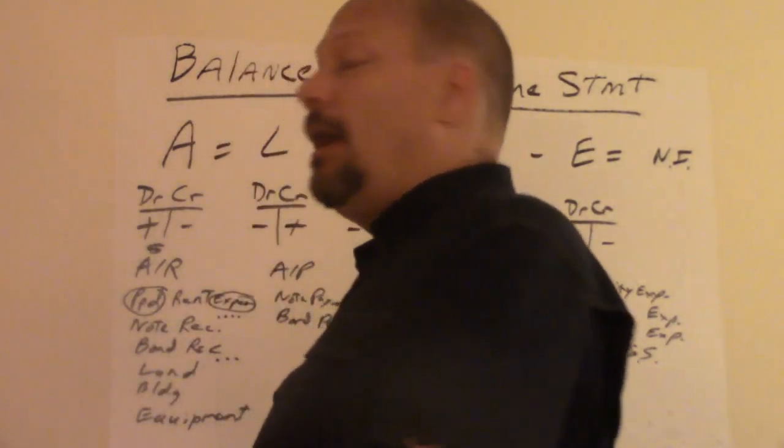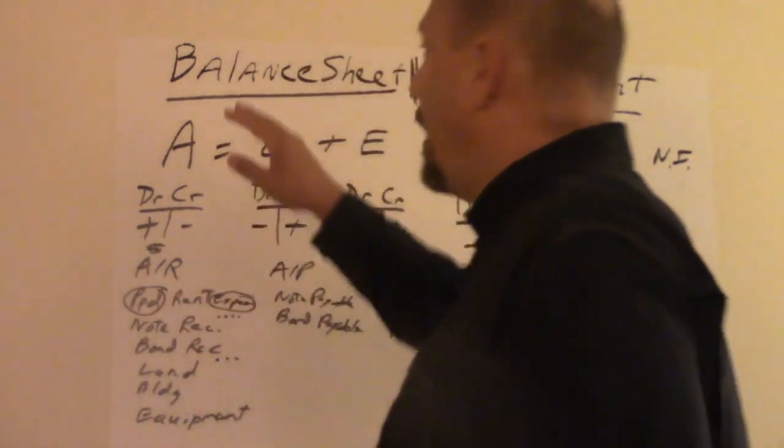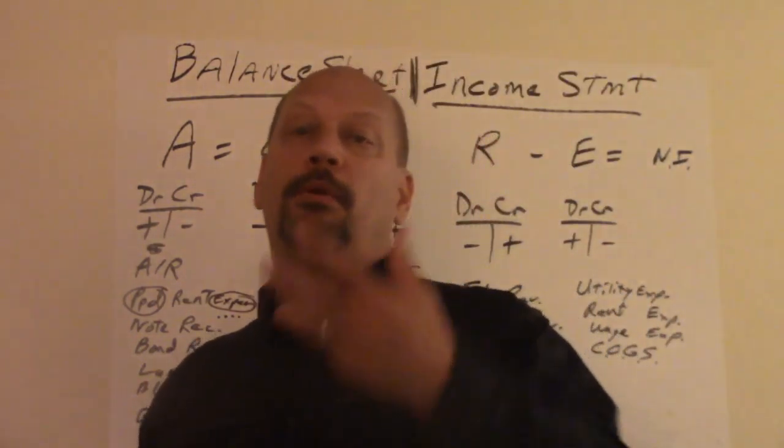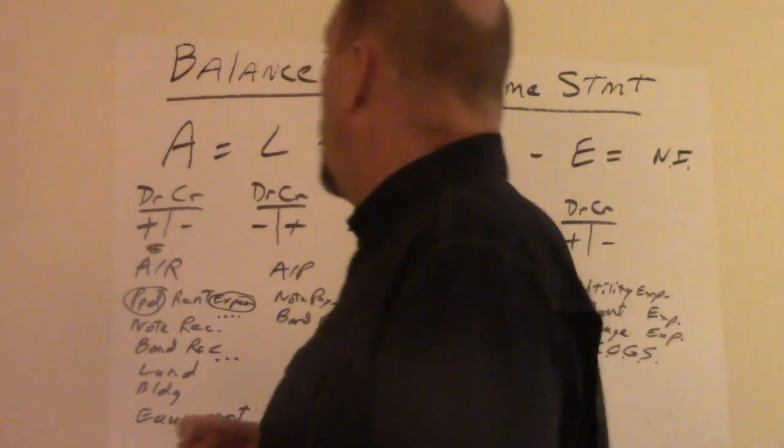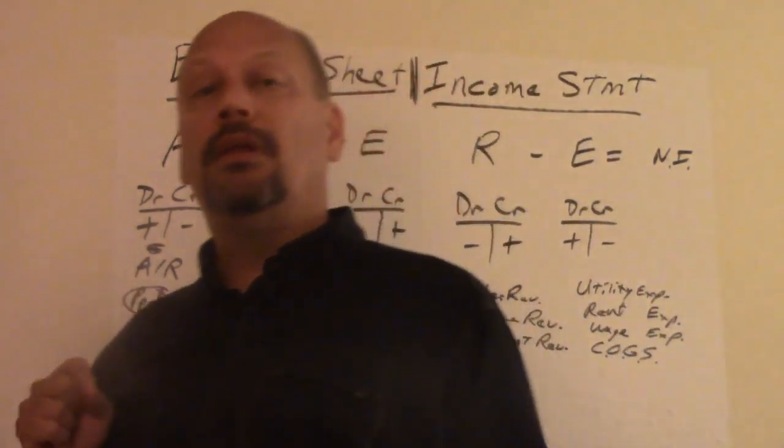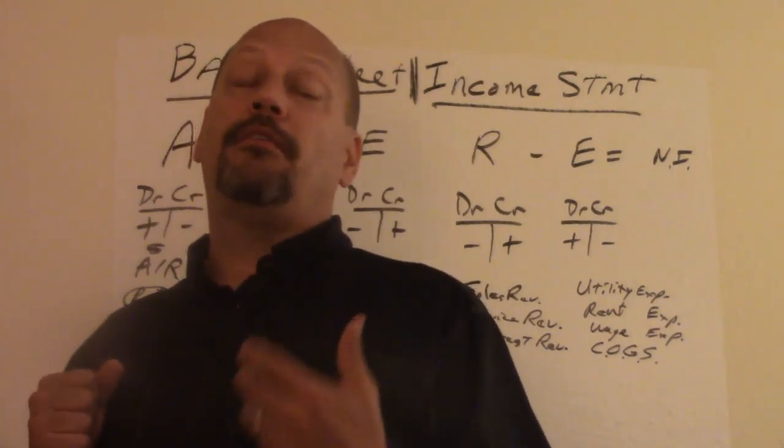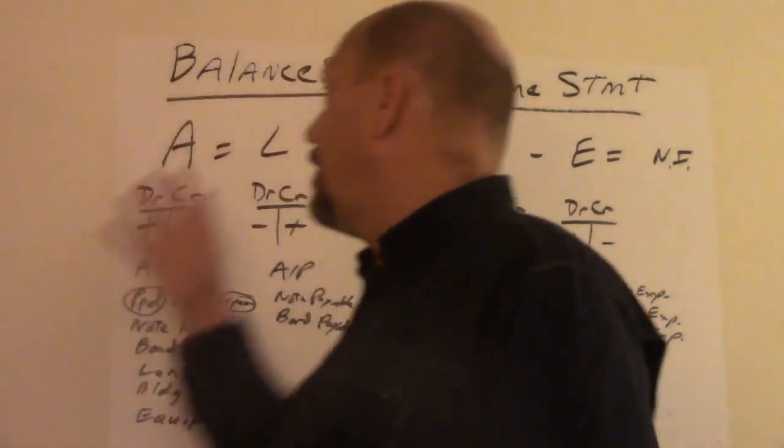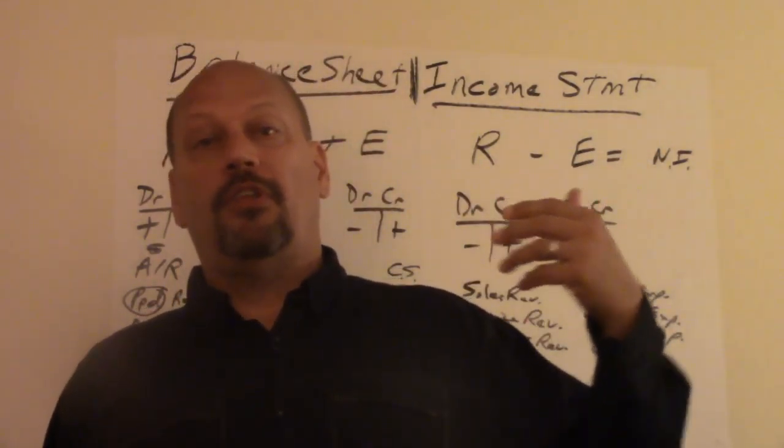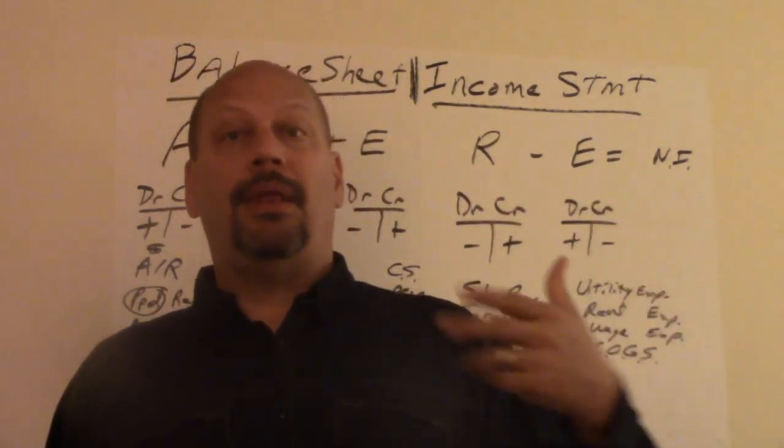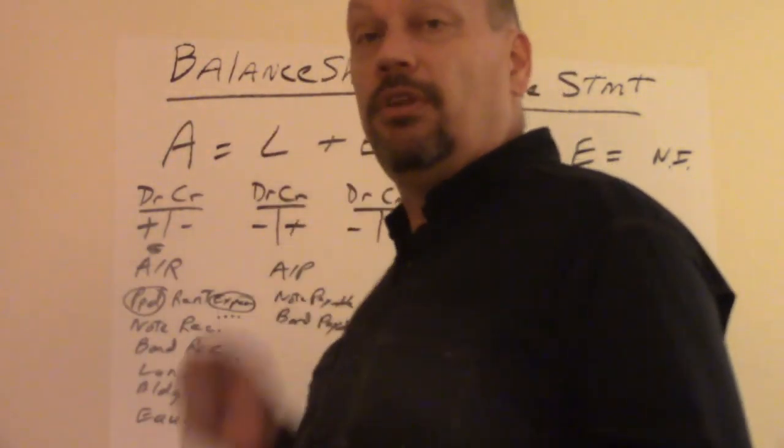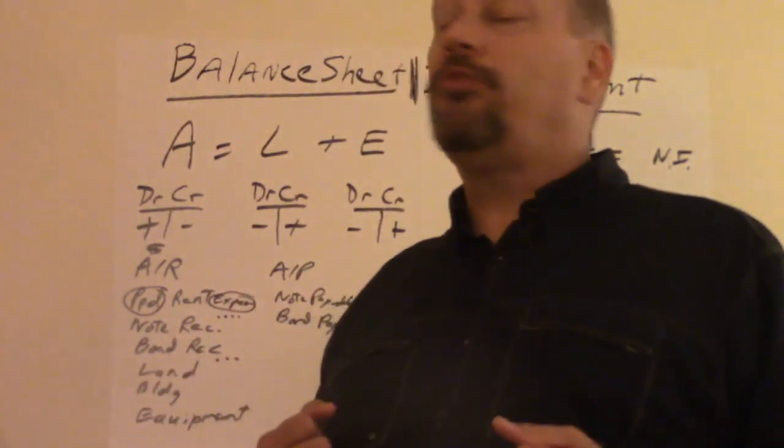We go back to the financial statements. The balance sheet and income statement are the main ones. Remember we talked about statement of retained earnings, which comes from the income statement's net income and part of the balance sheet. We also talked about the statement of cash flow, which has to do with different events on the balance sheet and the operating section addresses net income and depreciation expense from the income statement.